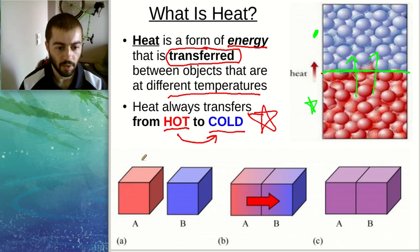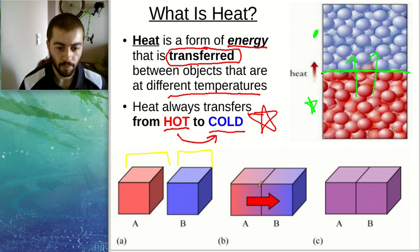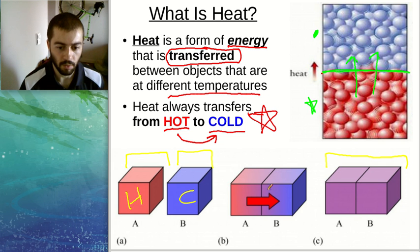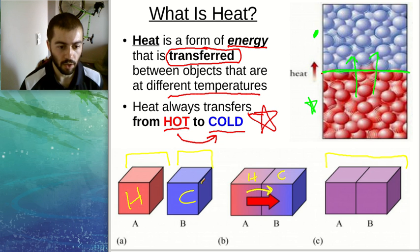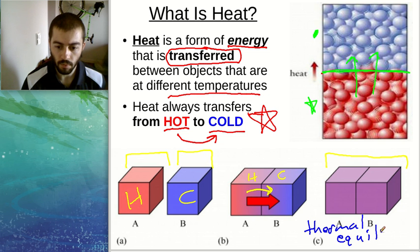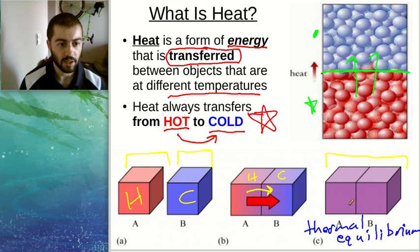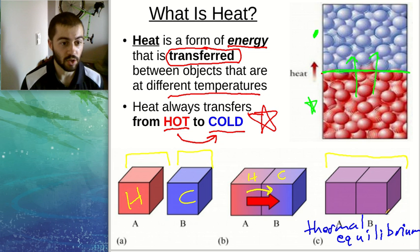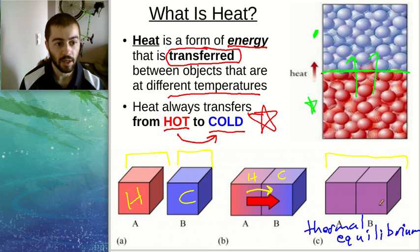Looking at two separate objects — a hotter one and a colder one — if we put them into contact with each other, eventually they'll meet somewhere in the middle. Heat transfers from the hot object to the cold object: the hot one gets cooler and the cold one gets hotter. Eventually they reach the same temperature, which is called thermal equilibrium. Once they're at the same temperature, no more heat transfer will occur.